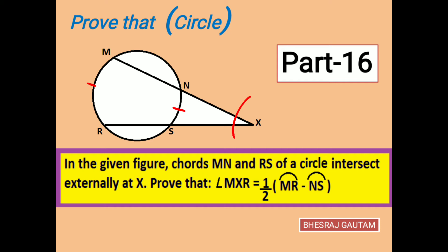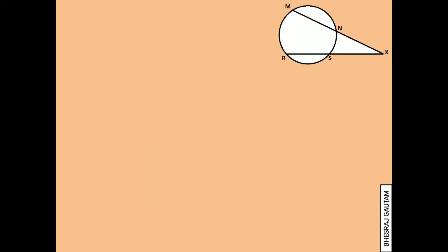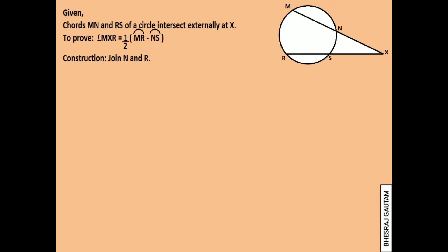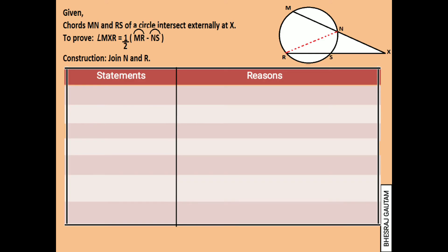As usual, we first draw the figure, mention the provided information, and the condition to prove. As a construction, here we join R and N as shown, which will help us to prove the condition easily. Now constructing the statement-reason table, we organize the process step by step in the following ways.